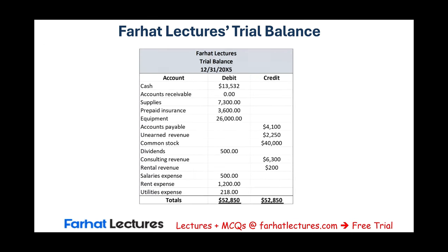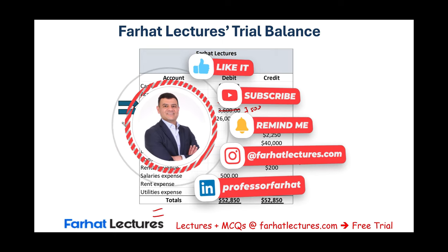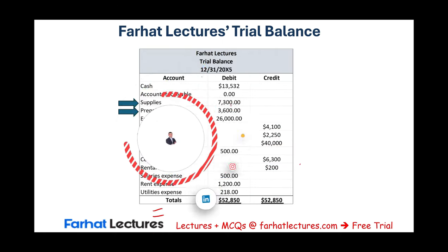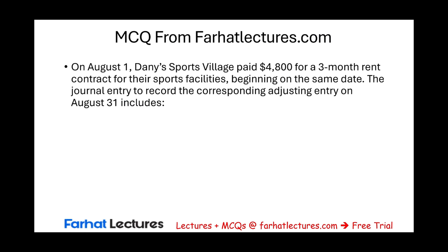To wrap up: we adjusted prepaid insurance to $3,500 and supplies to $5,000, creating two related expenses. In the next session, I will make an adjustment to the equipment account. Equipment is technically a form of prepaid — like prepaid insurance and supplies — but it's a little bit special. We'll talk about that in the next session.